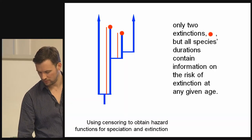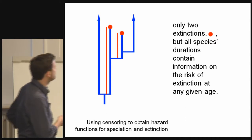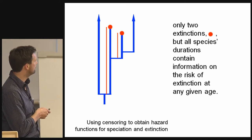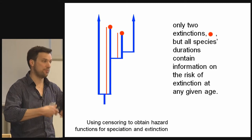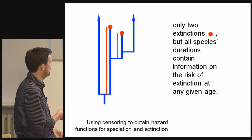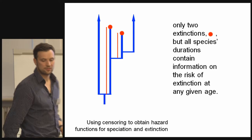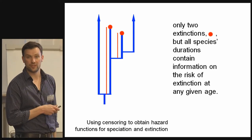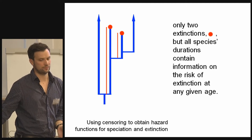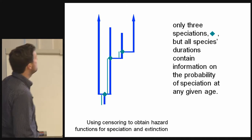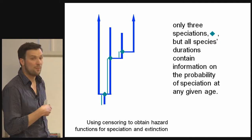How do we get at these functions? By looking at durations. We've got two extinctions here, but because death is a binary process — you're either alive or you're dead — we know something about the probability of extinction from studying all of these, even those that haven't gone extinct. That tells us something about the probability of going extinct. It's like an experiment when you expose rats to poison — if the rat survives, you know something about that rat's susceptibility to that poison. Similarly for speciation events: we've got three speciation events, but we know something from the other species about the probability of speciation.